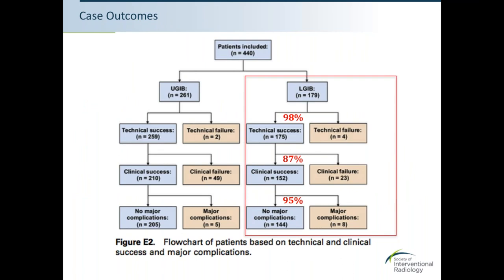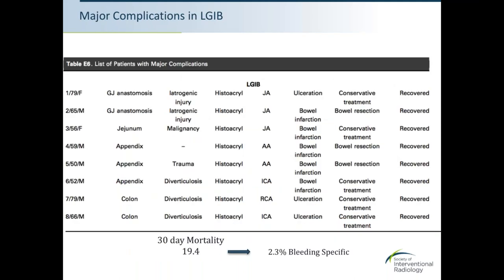For lower GI bleeding, technical success was similarly about 98%; 93% of those patients received NBCA only. This translated to 87% clinical success and a 5% complication rate. Bowel infarction occurred in five patients and ulceration in three, though all eight patients recovered; three did require subsequent bowel resection. Thirty-day all-cause mortality was 19%, reduced to 2.3% bleeding-specific mortality.